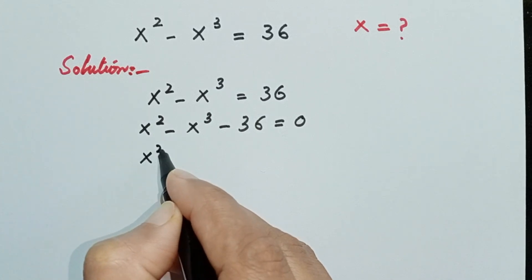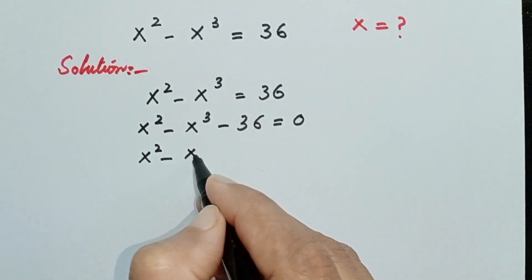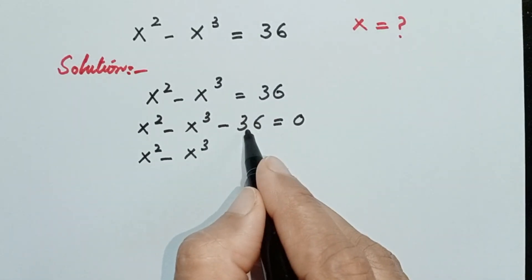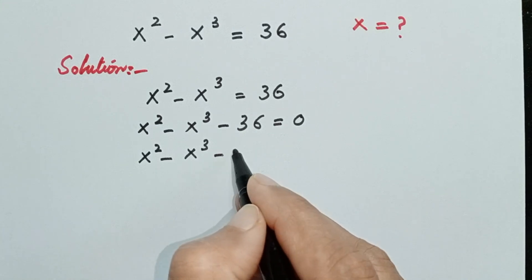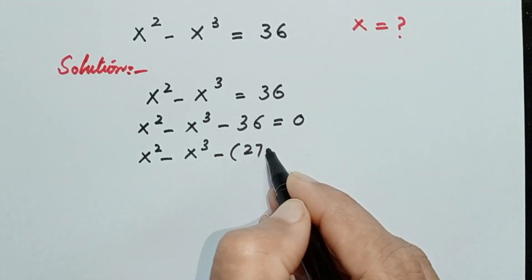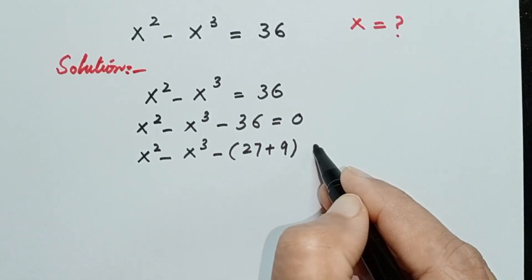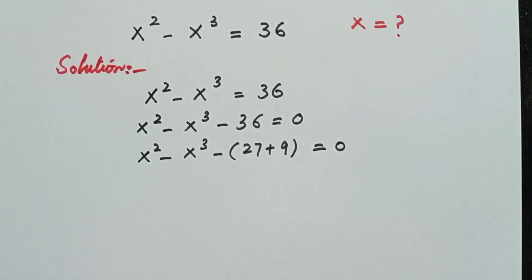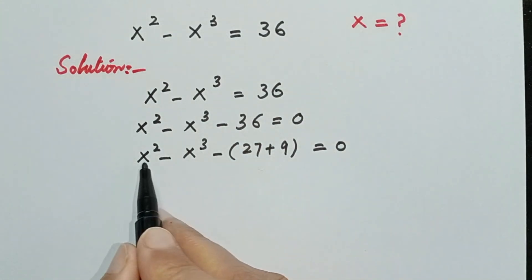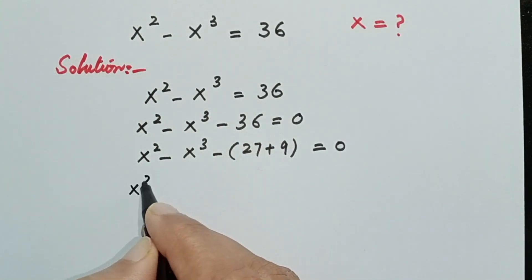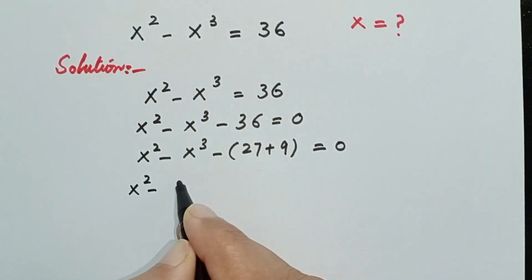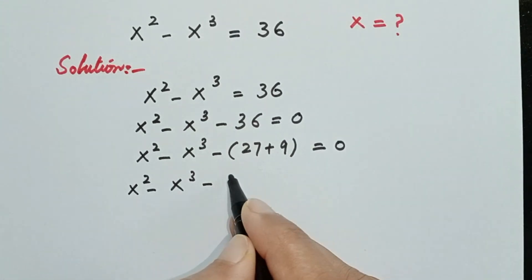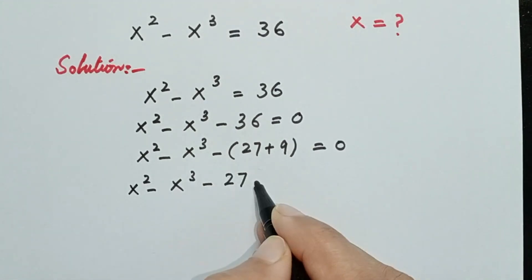In the next step, we will write 36 in the form of 27 plus 9. So we can write 36 as 27 plus 9 in the bracket, giving us x squared minus x cubed minus (27 plus 9) is equal to 0.